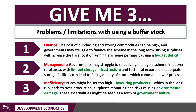The third limitation involves inefficiency and overproduction. Although in theory a Buffer Stock tries to protect both producers and consumers, often they tend to favour producers. The target prices may be set too high — if a producer gets a very generous price from the Buffer Stock, they'll just carry on producing, potentially investing more, adding more fertiliser, and drawing more water from aquifers. This can lead to overproduction, surpluses rise, and it risks causing severe environmental damage. Those externalities might be seen as a form of government failure arising from the Buffer Stock.